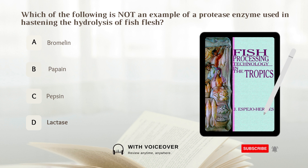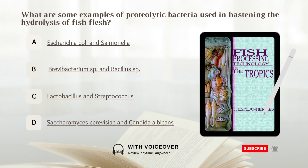Which of the following is not an example of a protease enzyme used in hastening the hydrolysis of fish flesh? A. Bromelain. B. Papain. C. Pepsin. D. Lactase. Answer: D. Lactase.